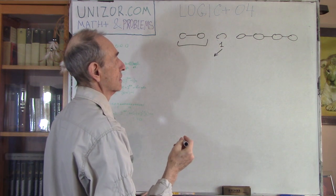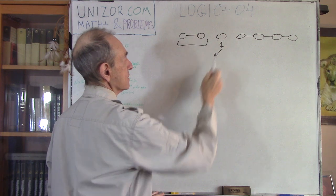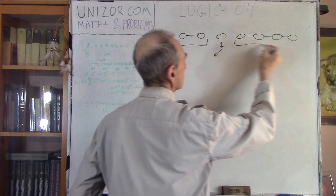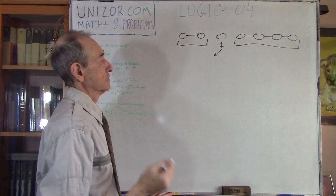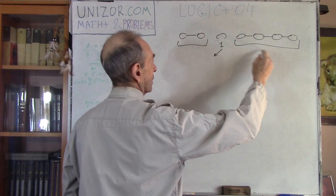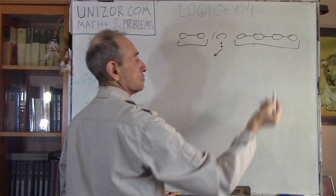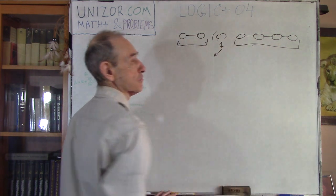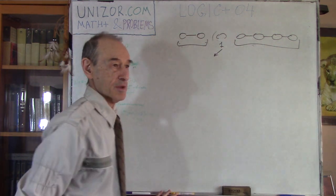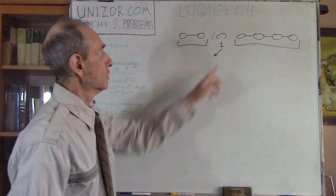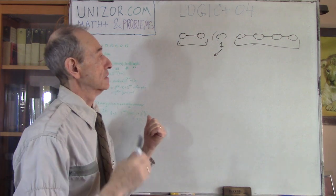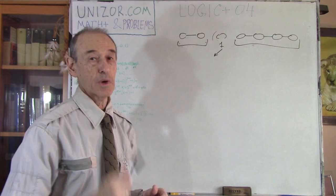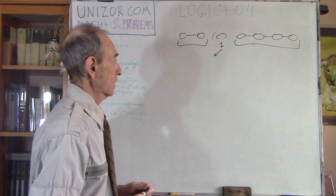For the third dinner, he gives the two-link segment plus the one cut link. For the fourth, he takes back those three and gives the four-link segment. For the fifth, he leaves the four and adds the one. For the sixth, he takes one back but adds the two-link segment to the four. For the seventh, he gives all of them. So only one link is cut, and he pays individually for each dinner with one ring extra.